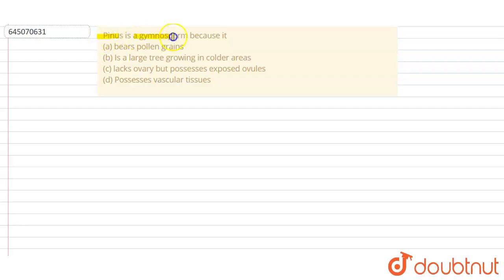question: Pinus is a gymnosperm because... So they're asking why Pinus is a type of gymnosperm, why it is not an angiosperm or any other type of plant. Option A: bears pollen grains. Option B: is a large tree growing in colder areas. Option C: lacks ovary but possesses exposed ovules. Option D: possesses vascular tissues.